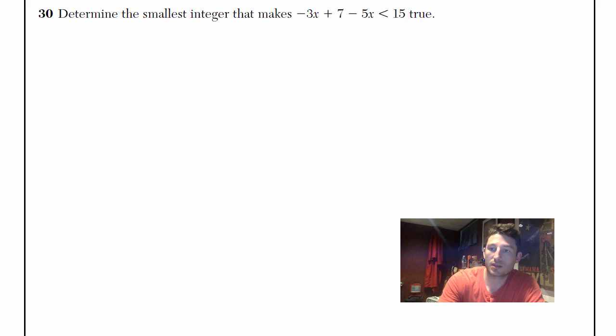So when I look at this question, the first thing I notice is that this and this, it's not fully simplified. So we should do that. So negative 3 minus 5 is negative 8x.